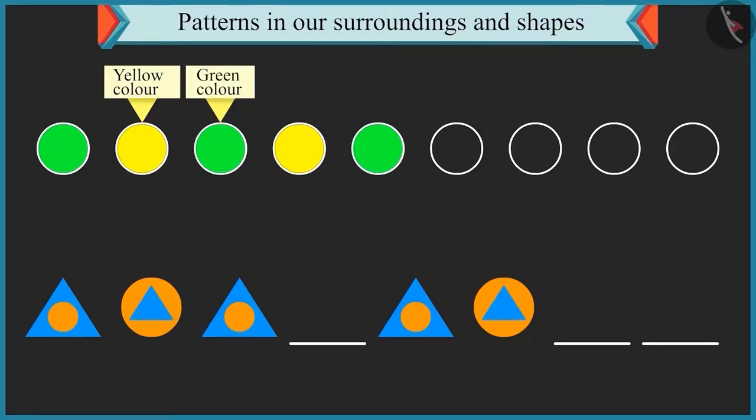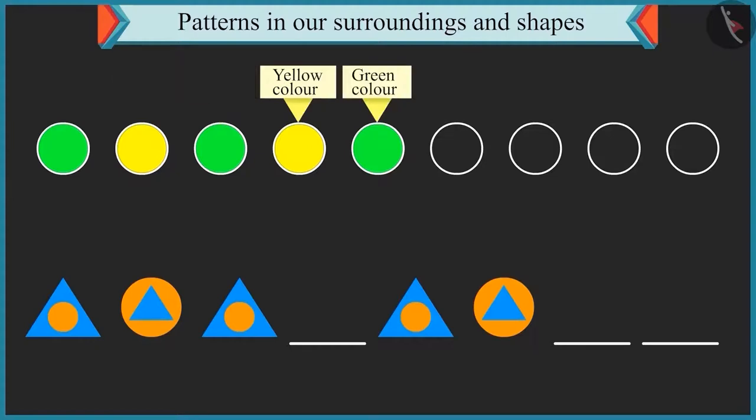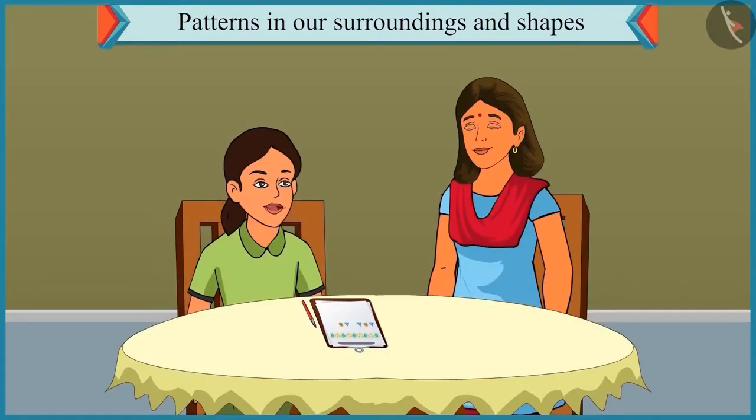Yes. The yellow and green colours are repeated in the next circles. You are right. Now if you fill the next circles with yellow and green colour and repeat it, the pattern will be complete. Yes. This pattern is very easy.